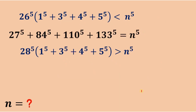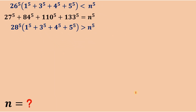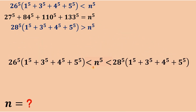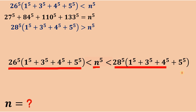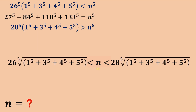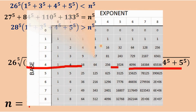Setting this aside, we can see that n raised to the fifth power is greater than 26 raised to the fifth power times that sum, and less than 28 raised to the fifth power times that sum. If we take the fifth root on both sides, the inequality stays the same. So n is greater than 26 times the fifth root of that sum, and less than 28 times the fifth root of that sum. We will use a table to make this calculation faster.